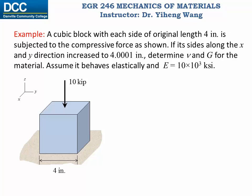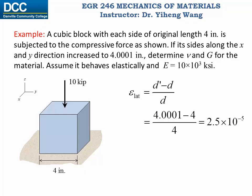For this problem, first let's identify the axial direction — in this case the z direction is the axial direction, therefore x and y are both lateral directions. The lateral strain epsilon lateral equals the new dimension minus the old dimension divided by the old dimension: (4.0001 − 4) / 4 = 2.5×10⁻⁵, which is dimensionless. Both normal strain and shear strain are dimensionless. Along the longitudinal z direction, because the material behaves elastically, Hooke's law applies: sigma z equals Young's modulus times epsilon longitudinal.